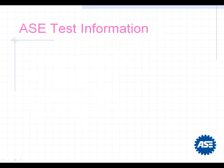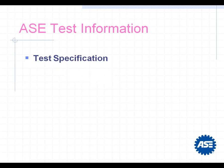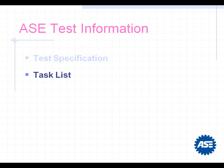Technicians always ask, 'John, what's going to be on an ASE test?' Fortunately, ASE publishes information that answers that very question — the ASE test information found in the study guides we publish. We create test outlines for each and every test. They're laid out as a test specification and a task list. That task list is the outline of the test, covering all the skills technicians should know when doing that work for a living, whether it be engine repair, brakes, suspension, or steering.